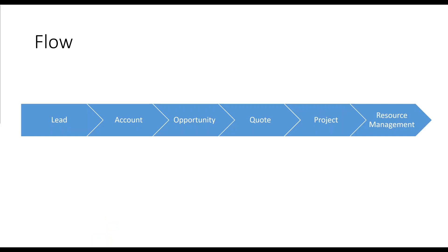From beginning to end, the flow typically looks like: lead, account, opportunities. You start with a lead coming in from a trade show or your website, you verify it, create the account, and it becomes an opportunity. From there you track it through different stages, and at one point you create one or several quotes. This then becomes a project if you get the work, and once you get the work you execute on the project — managing resources, time entry, and project reporting.